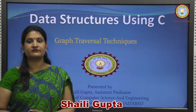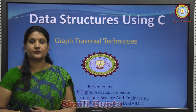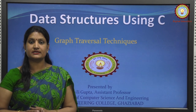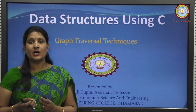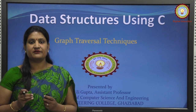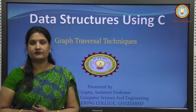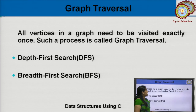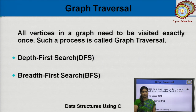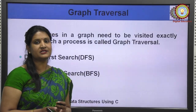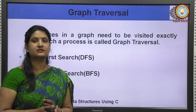Hi, the topic is Graph Traversal Technique. In the previous lecture, we discussed what the basic terminologies associated with the graph are and how to store the graph in memory. Now, we discuss how to traverse and search a node in the graph. Graph traversal means visiting every node and edge exactly once in a well-defined manner. There are two techniques for traversing a graph: BFS and DFS — Depth-First Search and Breadth-First Search. These two techniques are used to traverse and search a node.